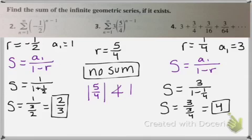For the second example, our r value is greater than 1, so you cannot find the sum, so we say no sum. And for the fourth one, our r value is 1 fourth. Be careful, that was a little bit tricky. So we can use our equation, and the sum is 4.